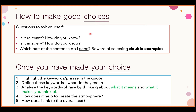Once you've decided on your choices, highlight the key word in the quotation or phrase — the word that really creates that image. Sometimes it's one word, sometimes two. Then think about how you would define them, what they mean, and then analyse them in context: what they make you think of, what they suggest, why they've been used, how they help create the atmosphere, and how they link to the overall text.